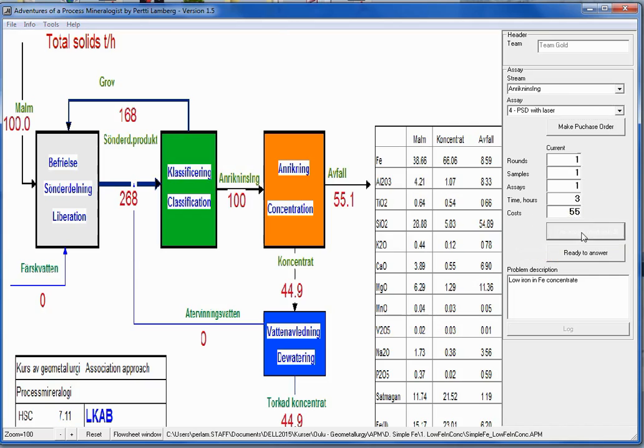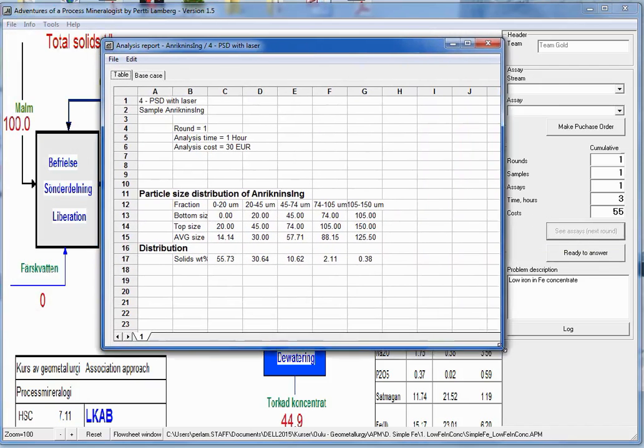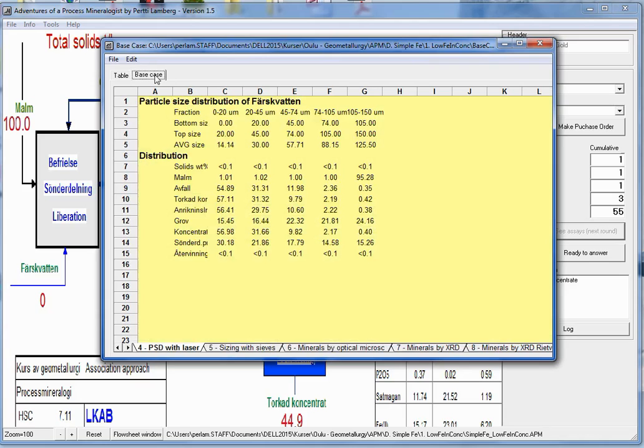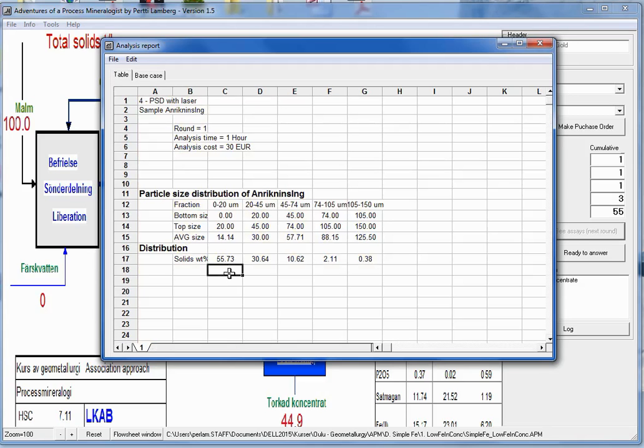To see the analysis, I press this one. And now the analysis pops up. This is the information of the size distribution. Now comparing the base case. I'm clicking this base case tab. And then these all tabs are available. And now I'm comparing the PSD with laser. And this is the stream to compare. I'm pressing Ctrl C to copy that. And pasting it below here, just to see that whether there is a difference.